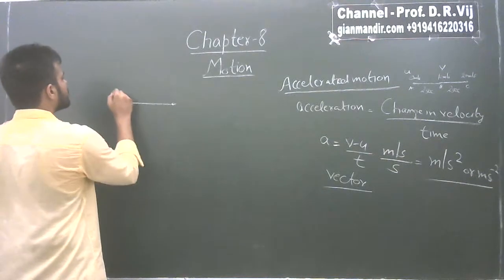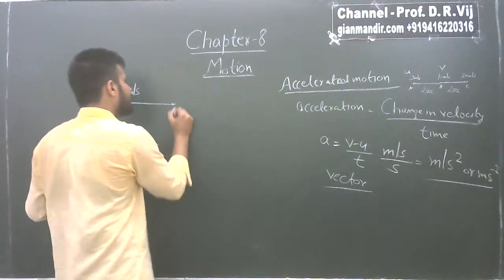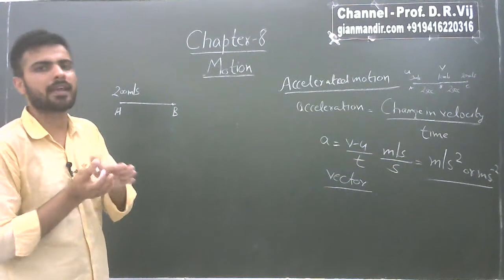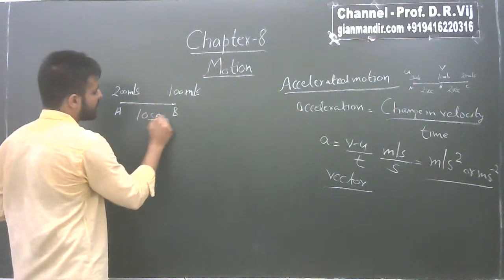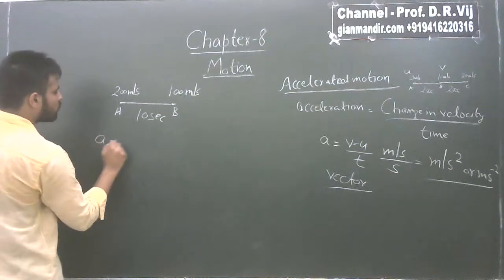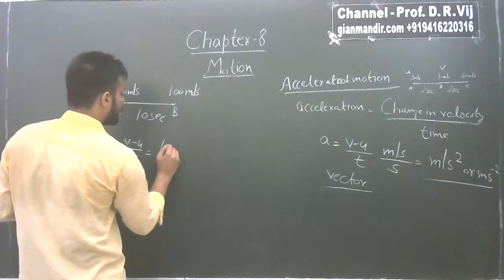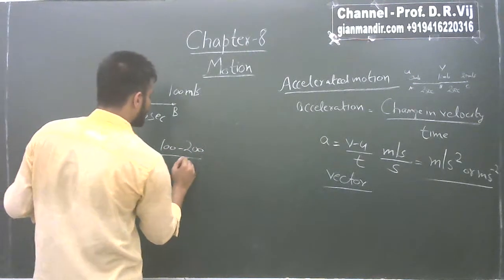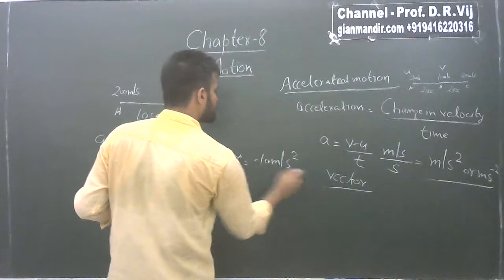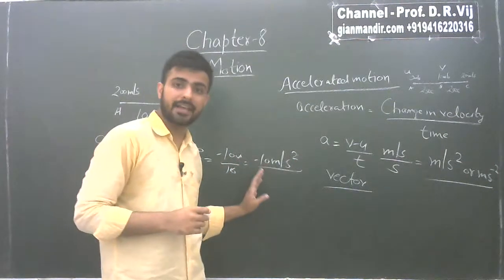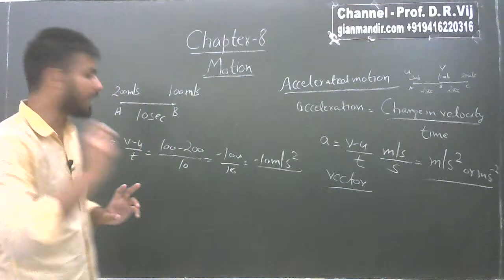When it reached B, the driver applied brakes and decreased the velocity to 100 meters per second. Time taken was 10 seconds. To find acceleration: a = (v − u) / t = (100 − 200) / 10 = −100 / 10 = −10 meters per second squared. So acceleration can be negative.